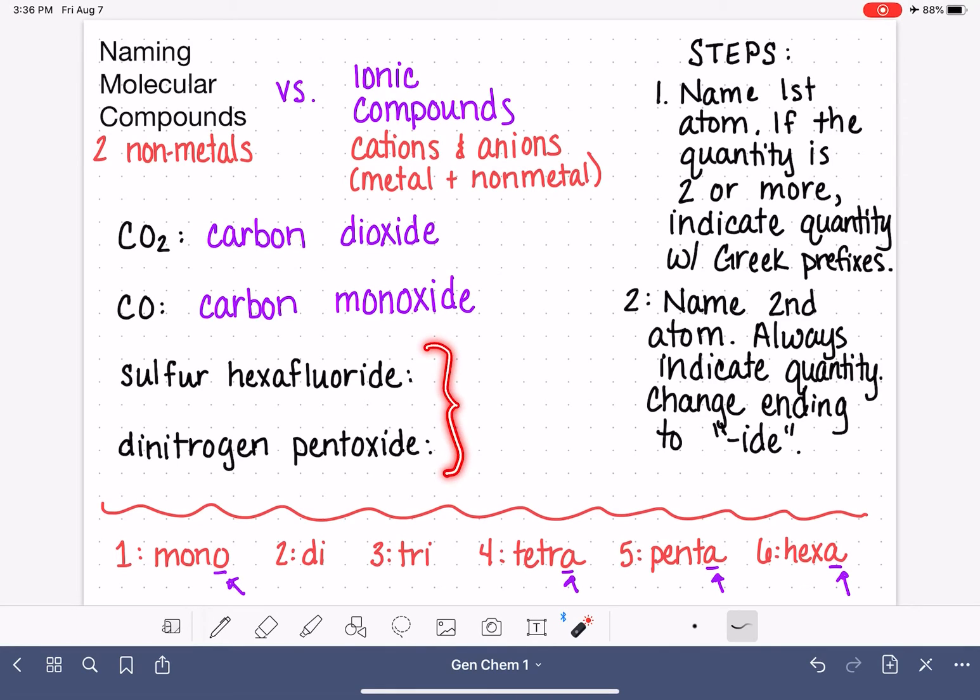Let's practice going the other way, converting some names into molecular formulas. This is actually really easy. So we just are going to read the name. Sulfur, molecular symbol, is S. And since it just says sulfur with no prefix, we know that that means that there's only one sulfur.